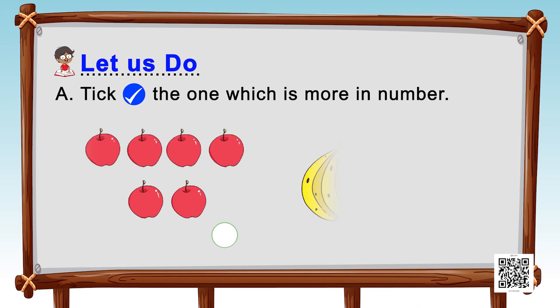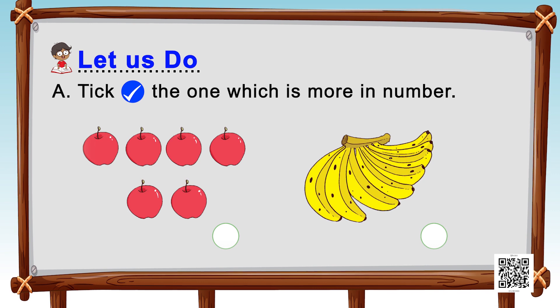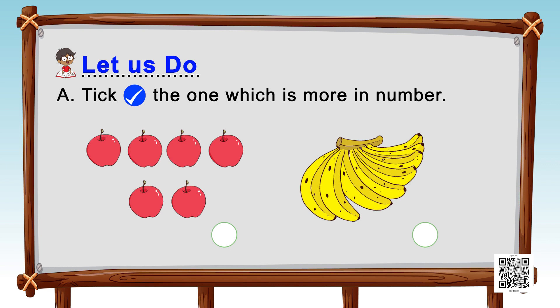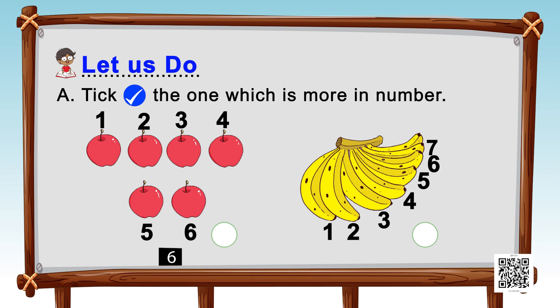We have to count the number of things we see and take the ones that are more in number. We have apples and bananas. Let's count the apples: one, two, three, four, five, and six — there are six apples. Now bananas: one, two, three, four, five, six, seven, eight — there are eight bananas. Which is more? It is eight — the bananas! So we put a tick mark there.